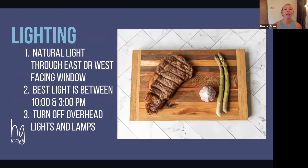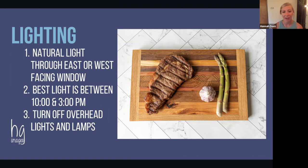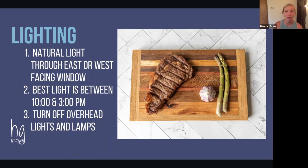Speaking of lighting, natural light through east or west facing windows is my favorite. This is a west facing window, and the best light is between 10am and 3pm. We're past the ideal light time right now — I would not photograph beef in this light, it's way too dark. So make sure you're using the prime light of the day, and be sure to turn off your overhead lights and lamps. We'll talk more about this in the smartphone photo tips section.